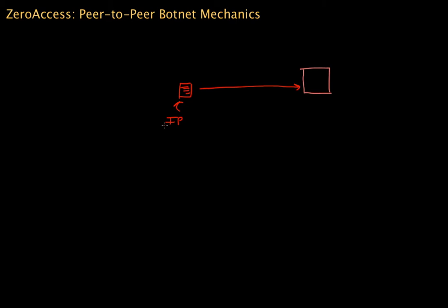During this initial communication, Zero Access provides the server with a special randomly generated string — technically a random domain, though I don't prefer that term. The idea is that this random string or domain is generated uniquely each day by an algorithm encoded inside the underlying Trojan binary itself.